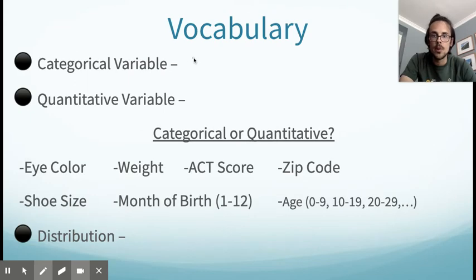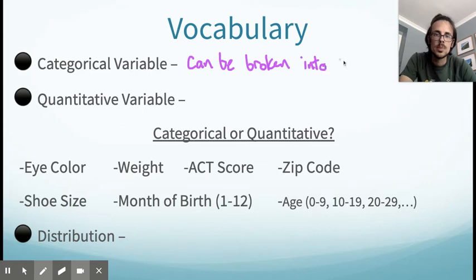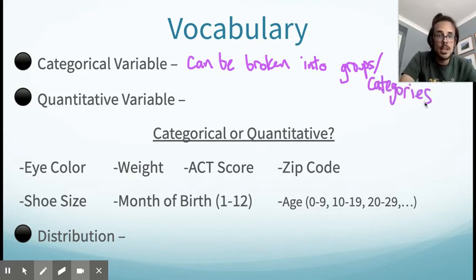A categorical variable is a variable that can be broken into categories, as you might guess from the name. So, it can be broken into groups or categories. To make a quick example of a categorical variable, let's say I was asking you for your year in school. You're going to tell me you're a freshman, a sophomore, a junior, or a senior. You can break that up into categories right there. That's a categorical variable.